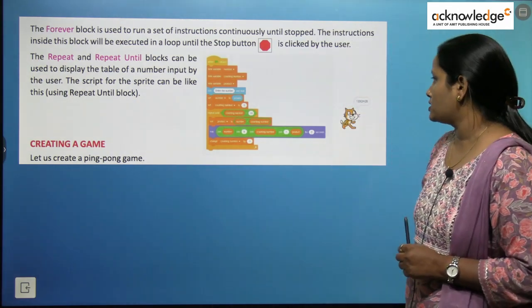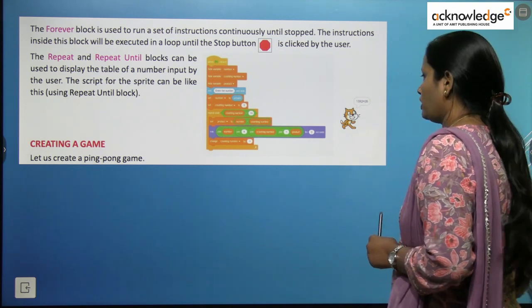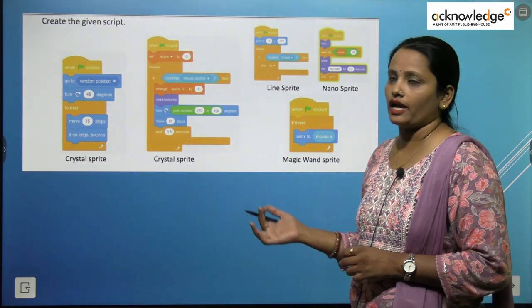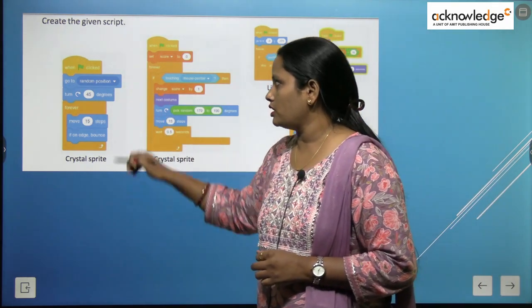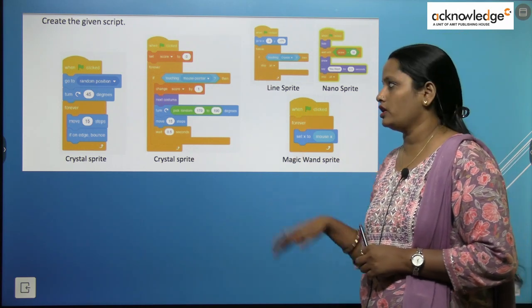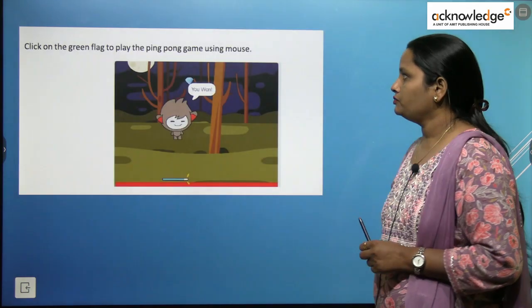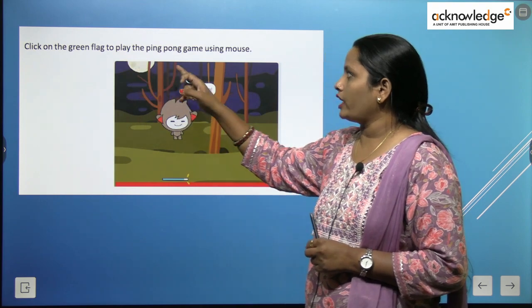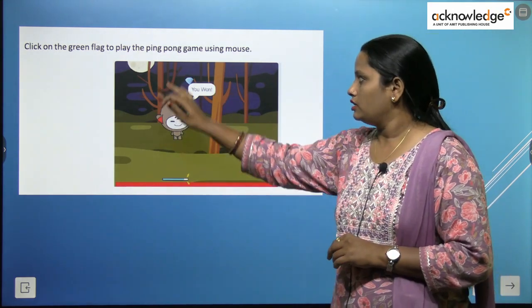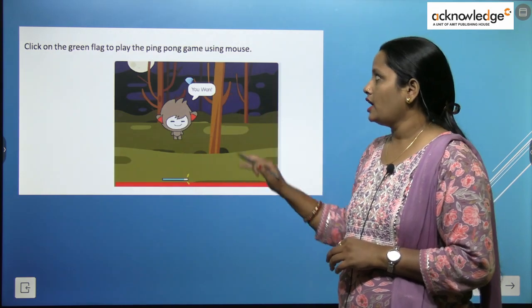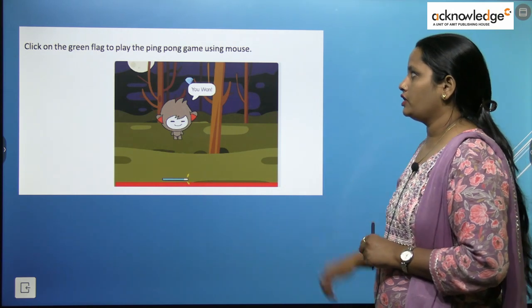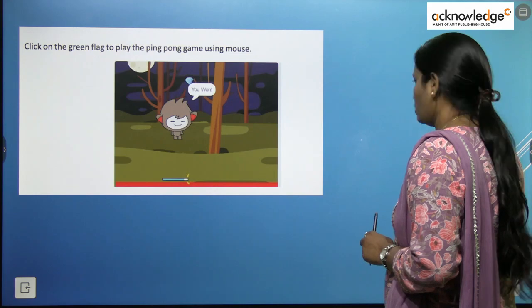Next, we are going to learn how to create a game. Let us create a ping pong game. Here are some scripts given — we can copy these scripts into our Scratch project and see the results. There are sprites: crystal sprite, magic wind sprite, line sprite, and nano sprite. Click on the green flag to play the ping pong game using the mouse. After putting all those programs, the game screen appears and the game starts.